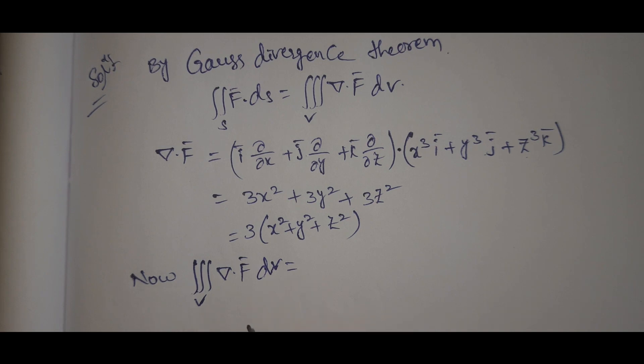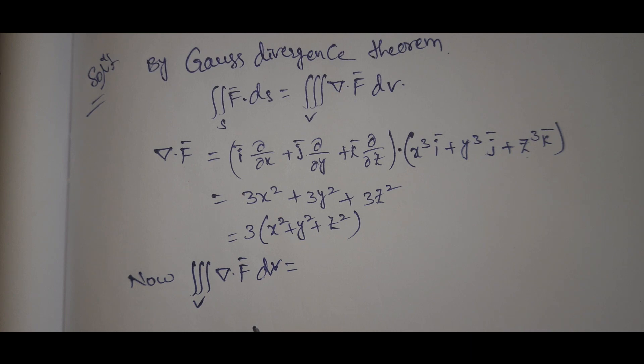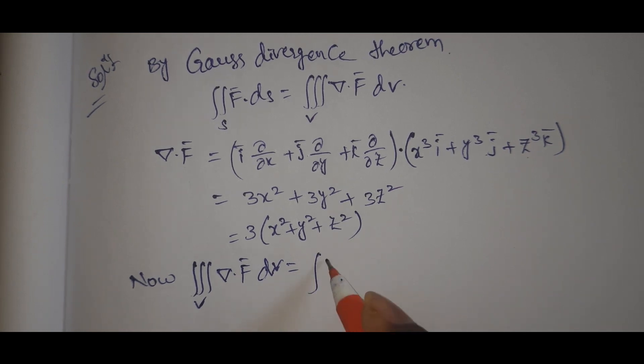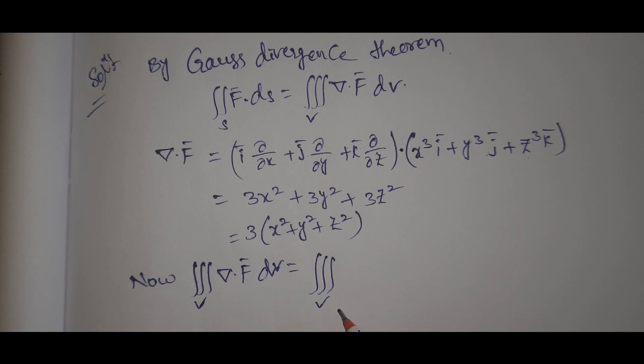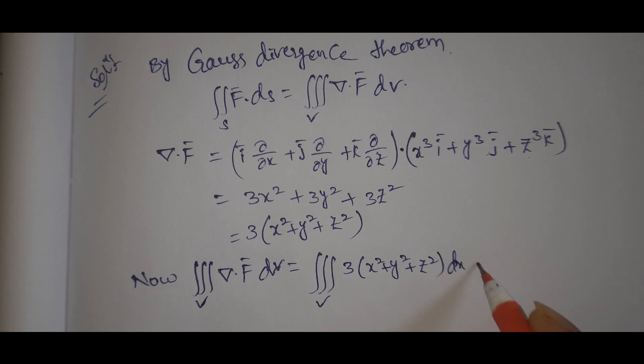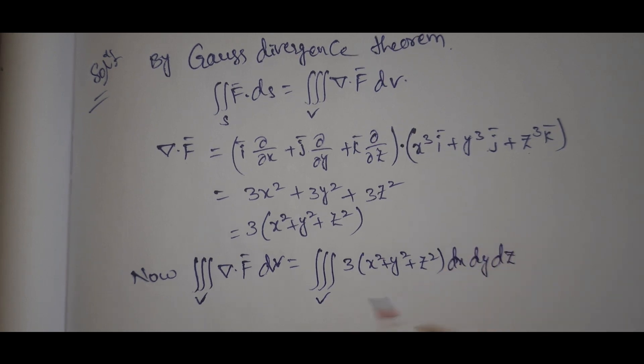Since this is spherical, we use spherical coordinates. We have r from 0 to A, theta from 0 to pi, and phi from 0 to 2pi. The integral is 3 times x squared plus y squared plus z squared dx dy dz.